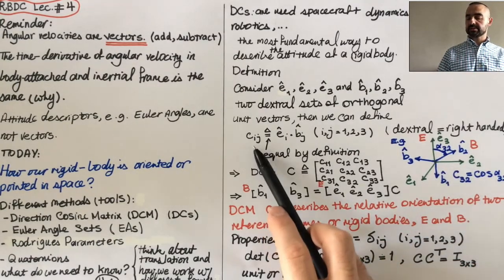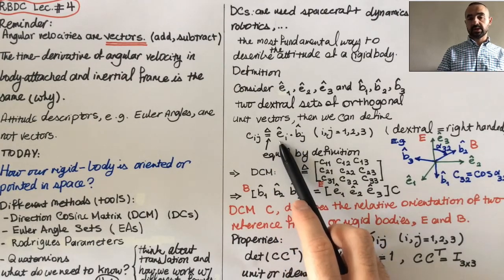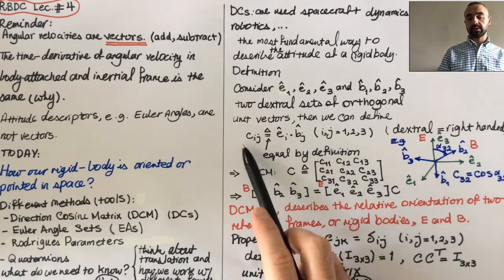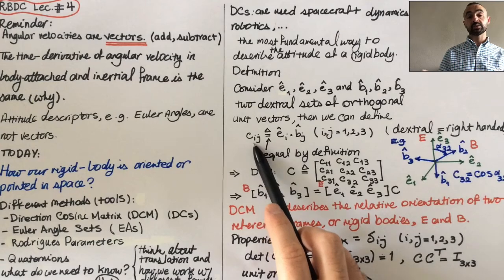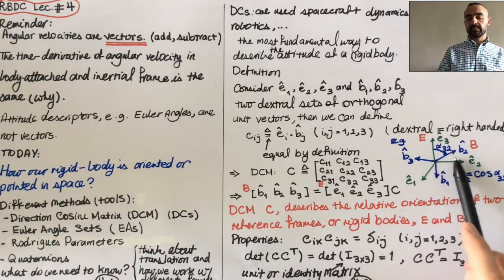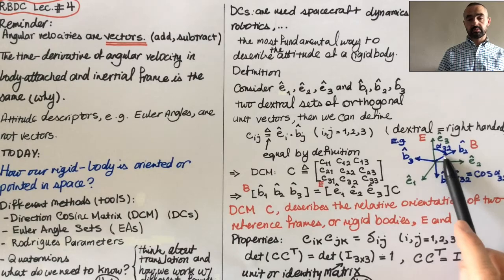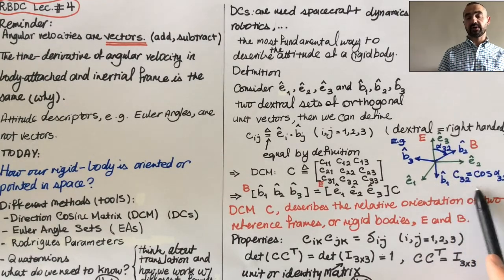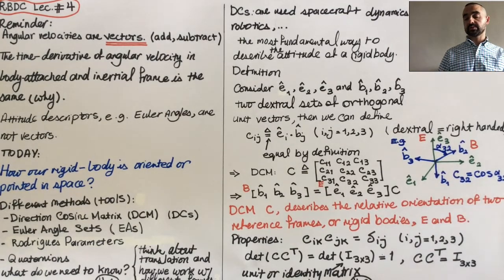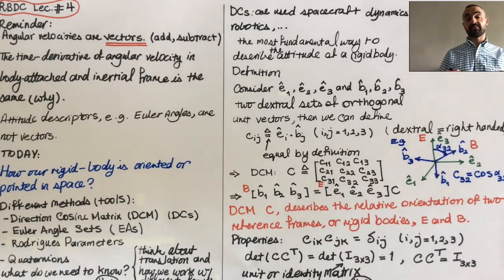As an example, think about these two frames. Then this cij, because this is a dot product, becomes the magnitude of ei, magnitude of bj, and the cosine of the angle between the two. We shorten that using c. So if the angle, for example, between e three hat and b two hat is alpha three two, then c three two would be cosine alpha three two. This is as simple as that.